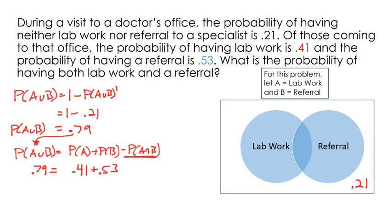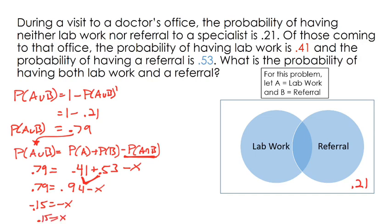This is really what we're trying to figure out — the probability of having both — so let's call that X and solve. I have 0.79 equals 0.94 when I combine those like terms, minus X. If I subtract 0.94 from each side, that's negative 0.15 equals negative X, or X equals 0.15 — a 15% chance of both A and B happening.